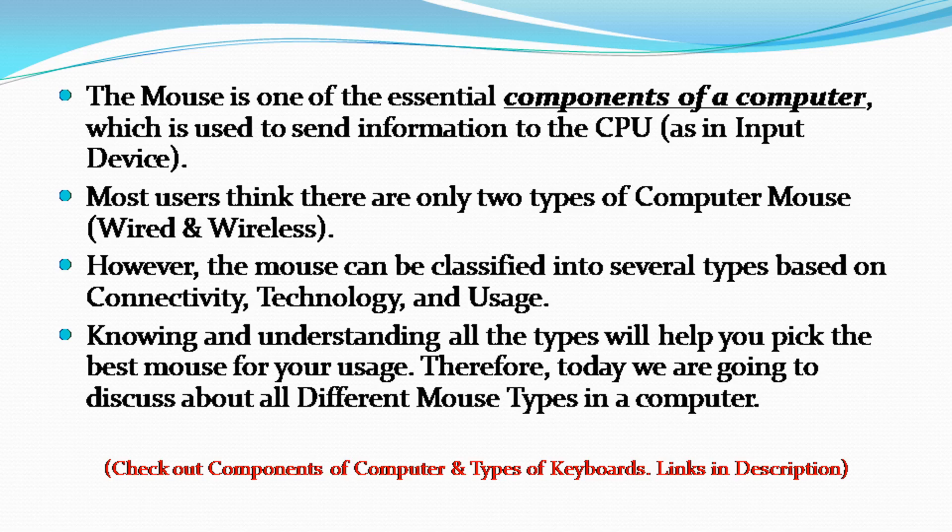The mouse is one of the essential components of a computer, which is used to send information to the CPU. As an input device, most users think there are only two types of computer mouse — wired and wireless. However, the mouse can be classified into several types based on connectivity, technology, and usage. Knowing and understanding all the types will help you pick the best mouse for your usage.